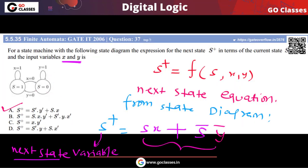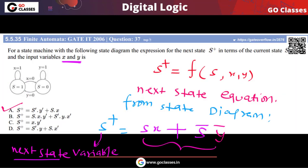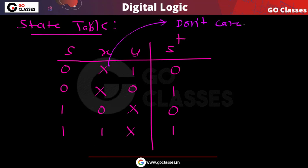Similarly, if you are in state 0 and Y is 0, then X is don't care and the next state will be 1. If you are in state S equal to 1 and X is 0, then Y is don't care and the next state will be 0. If you are in state 1 and X is 1, then Y is don't care and the next state will be 1. Note that these X or Y values marked don't care are actual don't cares.